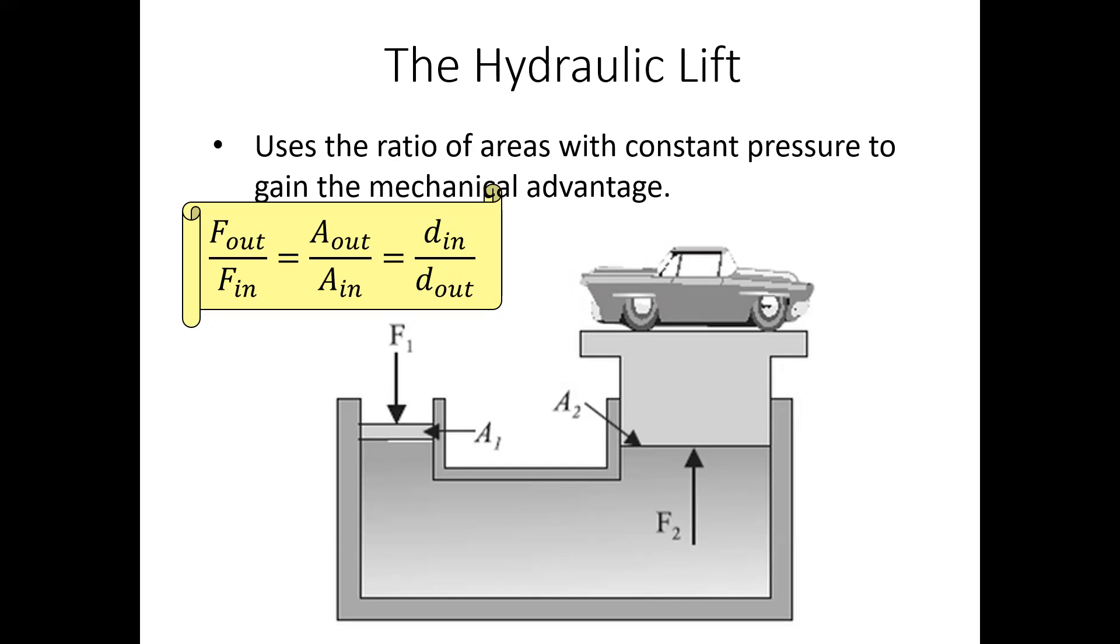You have water, which is incompressible, and you have it trapped within two pistons. First piston has an area A_1, second piston has an area A_2. Generally speaking, you want A_2 to be larger than A_1, and the reason why is because that means you could push with less force over a greater distance in order to lift something like a car up the other piston. So what we're saying here is that the output force divided by the input force is equal to the ratio of the output area, the area of the piston which is pushing up, divided by the input area, which is the area of the piston that you yourself is pushing down.